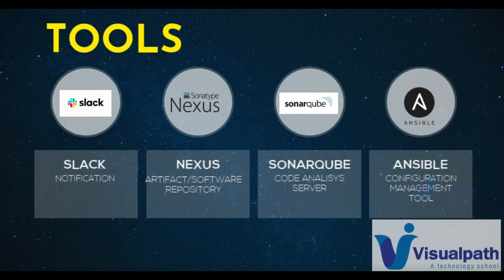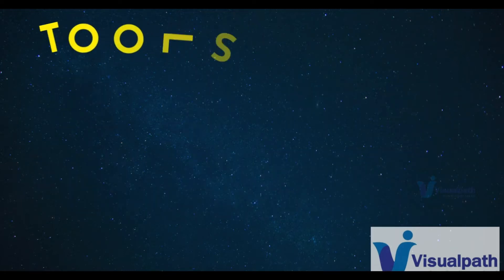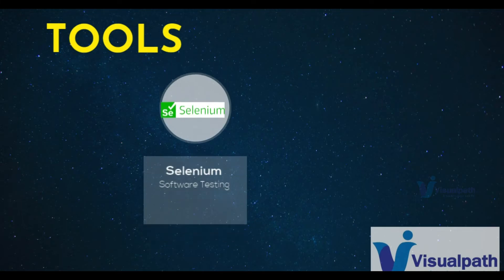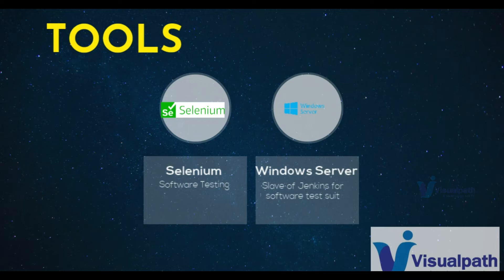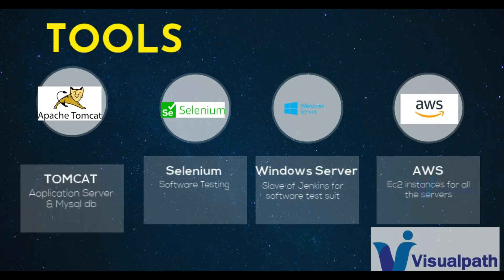We are also going to integrate Jenkins with Ansible, so deployment in this project will be done with Ansible. Selenium will be used for software testing, running on a Windows server, and the Selenium test suite will test our application hosted on an Apache Tomcat server, which will also be connected to a database server. All this setup will be done on AWS using EC2 instances as virtual machines.